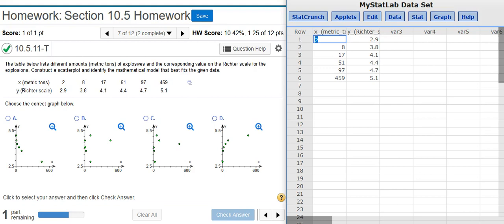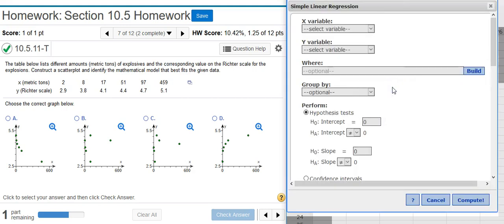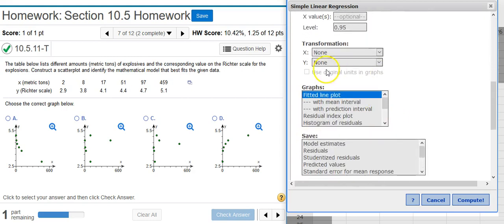The model we need to make here for this problem is a logarithmic model. To do that, I'm going to go into Stat, Regression, Simple Linear, select my x and y variables, and then scroll down here to the area that says Transformation.